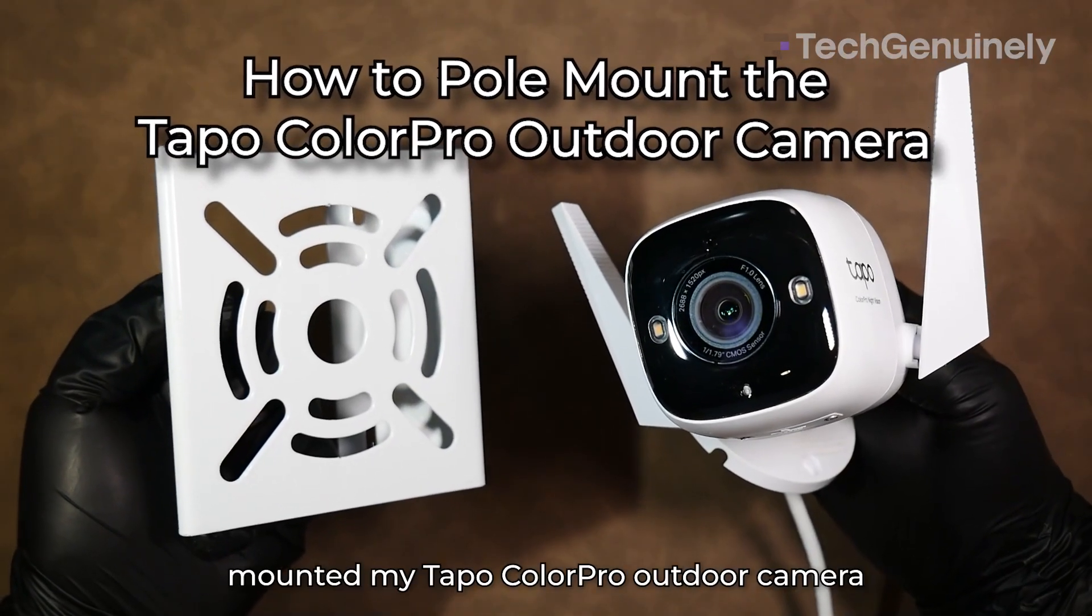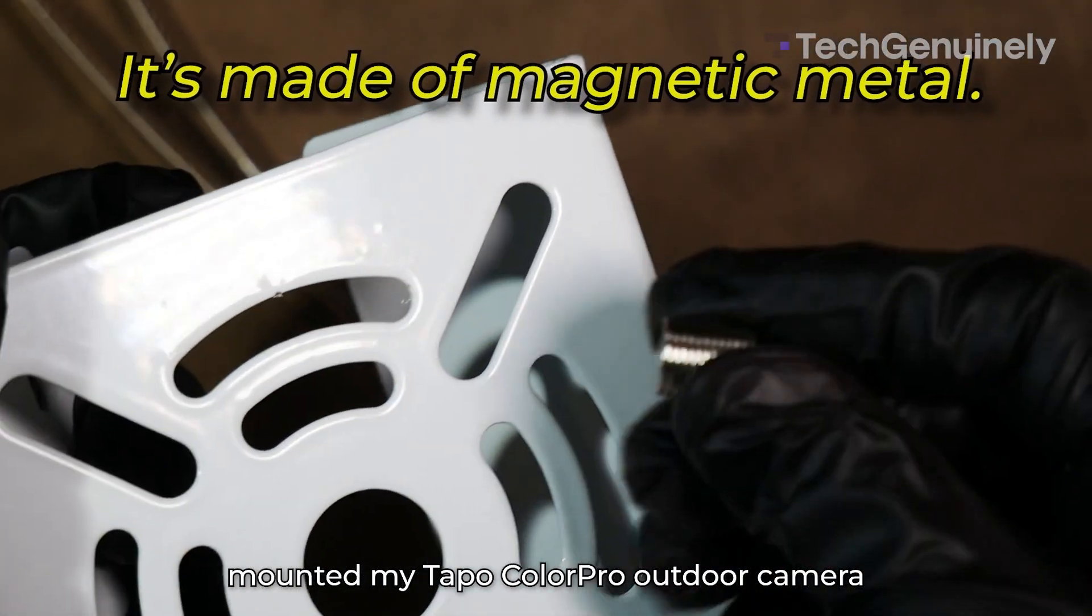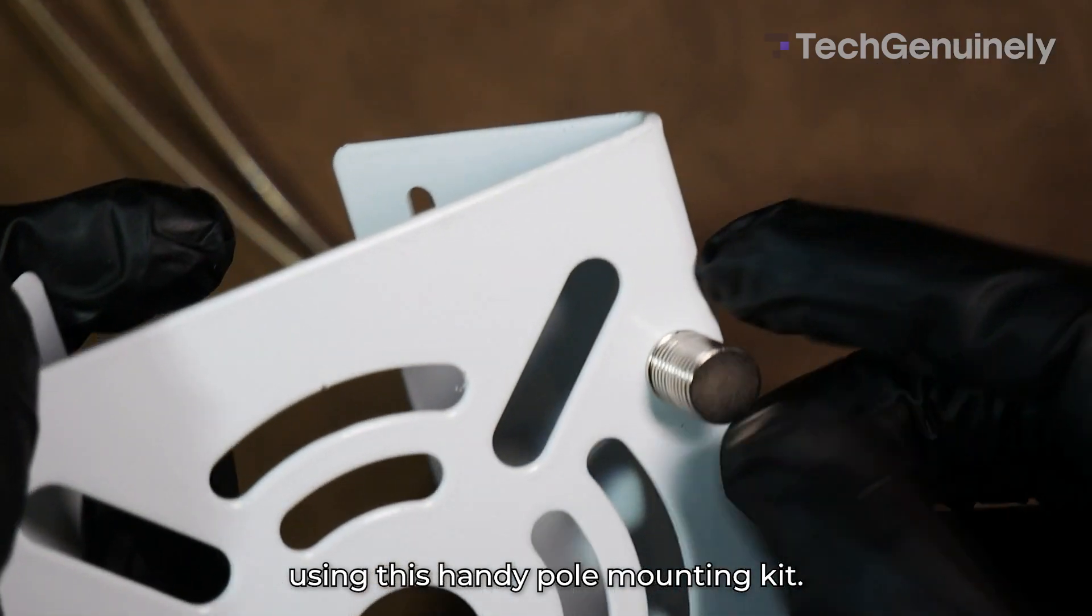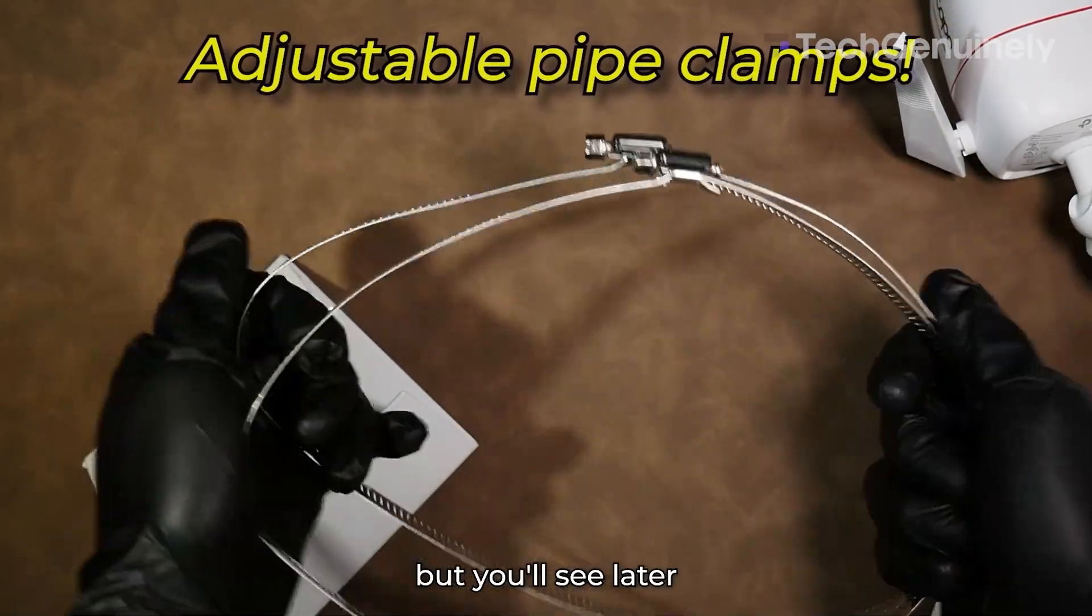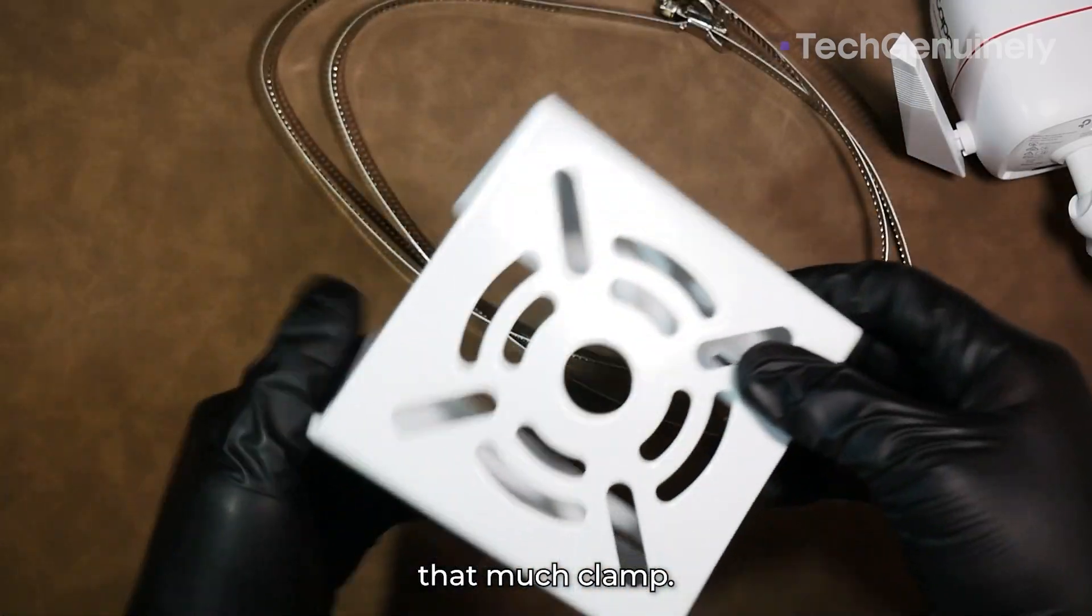Today, I'll show you how I pole mounted my Tapo ColorPro outdoor camera using this handy pole mounting kit. It uses these adjustable pipe clamps, but you'll see later that we're not going to need that much clamp.